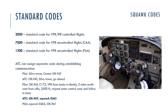You then provide details about your aircraft, your flight, where you are, your altitude, and what you intend to do: 'Oscar Kilo Foxit Alpha Tango, Cessna 172, VFR from Linda to Berkeley, 3 miles northwest from Alpha, 2500 feet. Request enter control zone and follow to Beta.' At this point, air traffic control may assign you a separate squawk code: 'Oscar Kilo Foxit Alpha Tango, squawk 0363.' You read it back: 'Squawk 0363, Oscar Kilo Foxit Alpha Tango.'